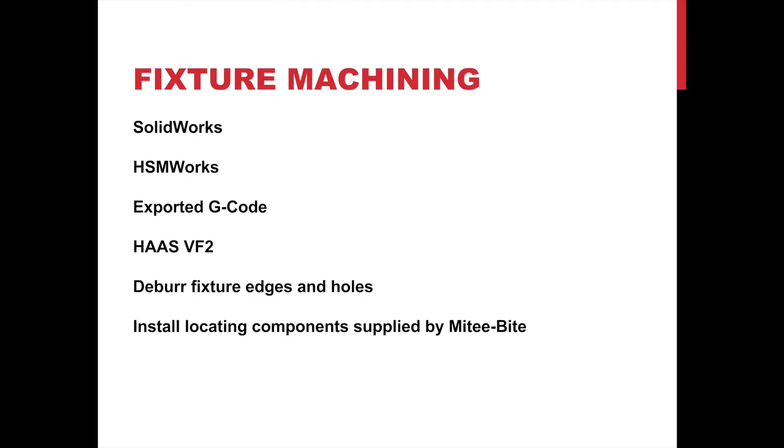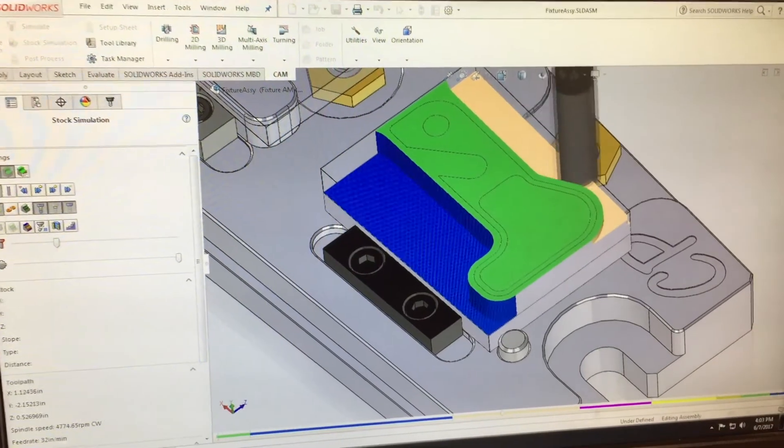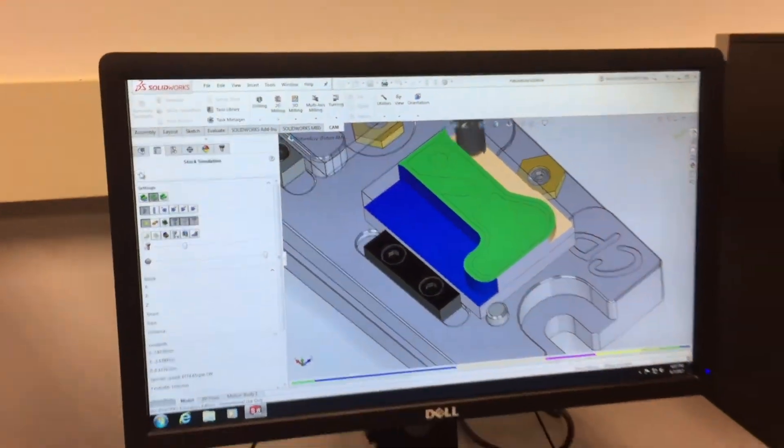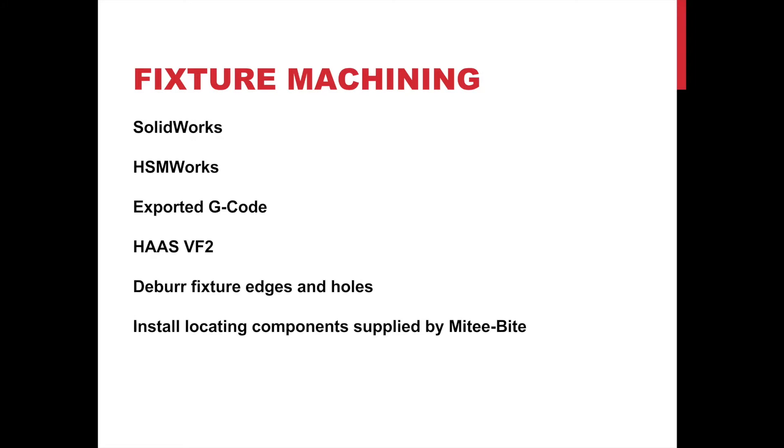Fixture machining. In order to machine the fixture plate, we first started with an assembly file in SolidWorks. From that, we were able to create toolpaths using HSMWorks. HSMWorks also allowed us to export these toolpaths as G-code. This G-code was then inserted into the Haas VF2 CNC mill. Once we did that, we ran the program on the stock plate and this gave us the final fixture plate. Once we took it out of the mill, we had to deburr the edges and the holes. And finally, we installed the locating component supplied by MightyByte. At this point, our fixture was ready to be tested.